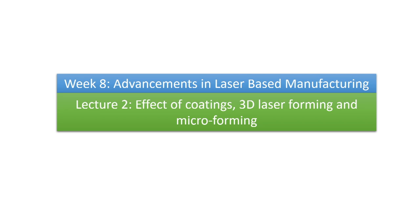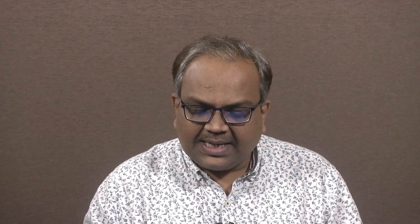This lecture 2 is on various effects of coatings on the improvement of the productivity of laser based forming. Moreover, we will also be studying the various techniques or irradiation strategies being used for 3D laser forming. At last, we will have some discussion on micro forming — how can we generate micro features on work parts using lasers.